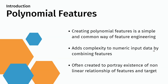Creating polynomial features is a simple and common way of feature engineering. It is used to add complexity to numeric input data by combining different features — either multiplying them, taking the square, and so on. It is often created to portray the existence of a non-linear relationship between features and the target. For example, your target may not be directly dependent on a single feature; it can depend on the multiplication of two features or the square of one feature multiplied by another.